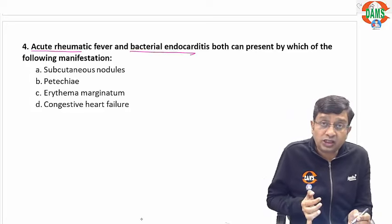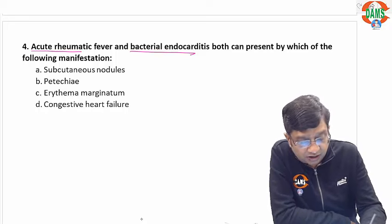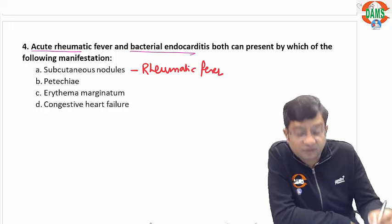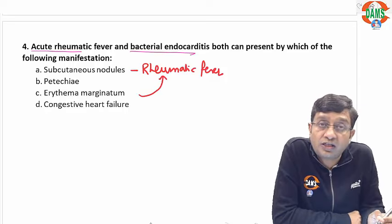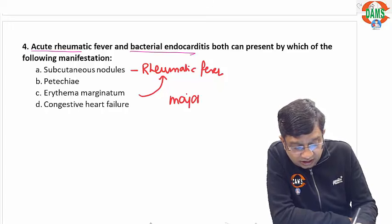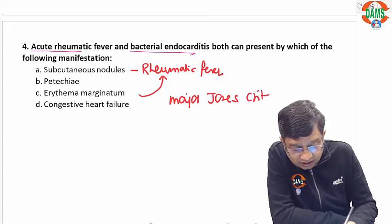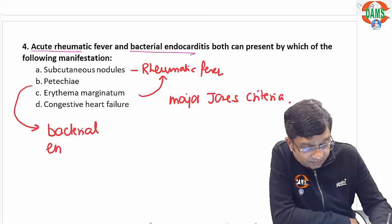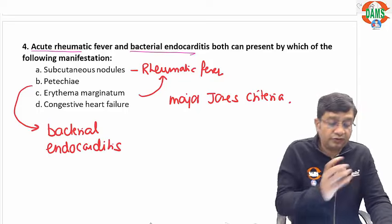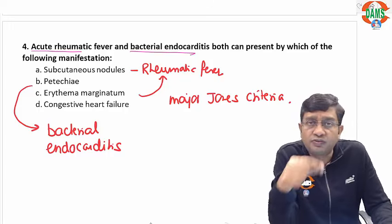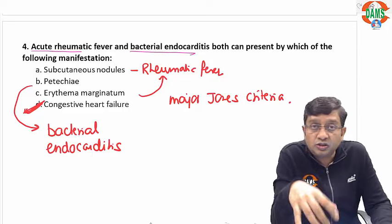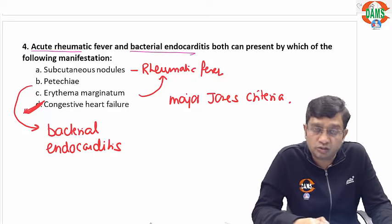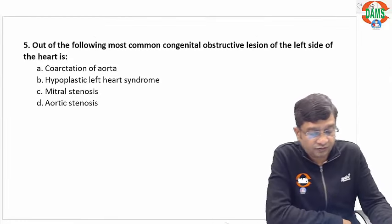Moving on to the next question: which manifestation can present in both acute rheumatic fever and bacterial endocarditis? Subcutaneous nodules and erythema marginatum are features of rheumatic fever and are major Jones criteria — seen only in rheumatic fever. Petechiae are mainly seen in bacterial endocarditis. The single feature common to both is congestive heart failure, which can be a presentation of both acute rheumatic fever and bacterial endocarditis.